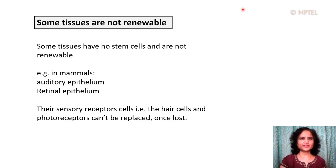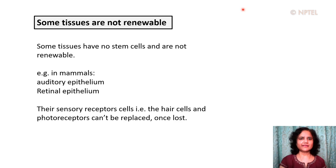Some tissues are not at all renewable. Some tissues don't have any stem cells at all and cannot be renewed even when cells are lost. For example, in mammalian systems, this is true for the auditory epithelium and also for the retinal epithelium. So if the sensory receptors in these organs — for example, the hair cells in the ear and the photoreceptors — are lost or damaged, they cannot be replaced. Once they are lost, they are irreplaceable.